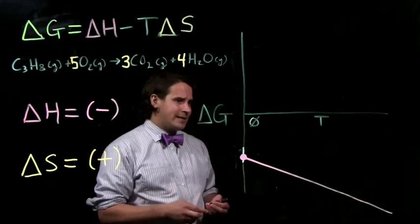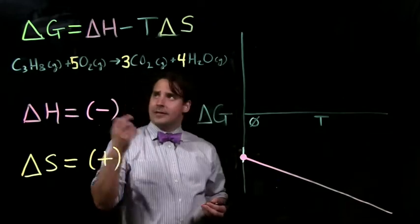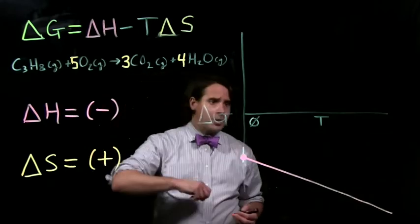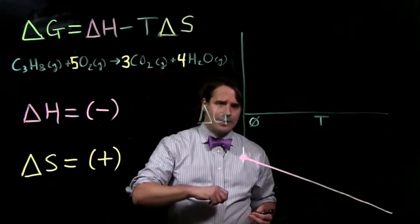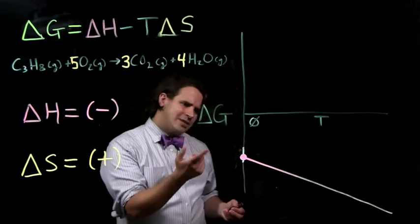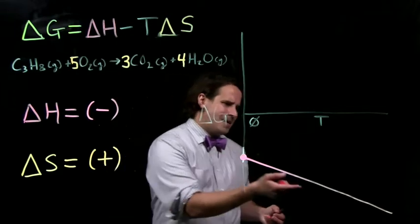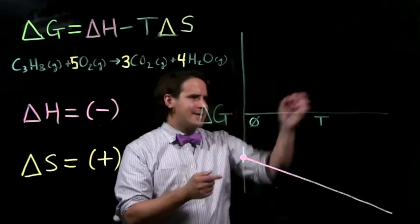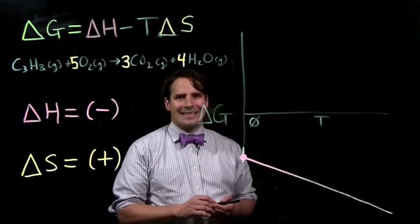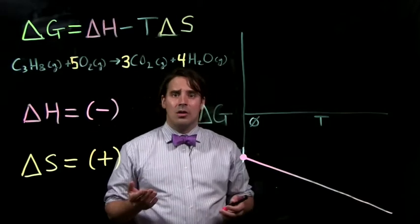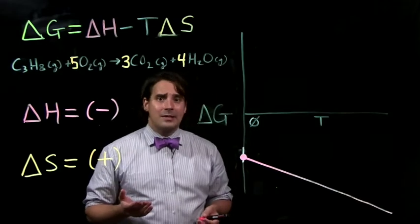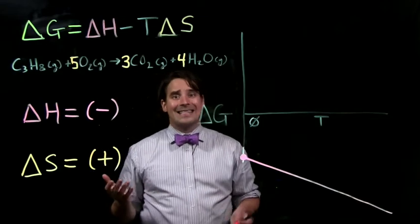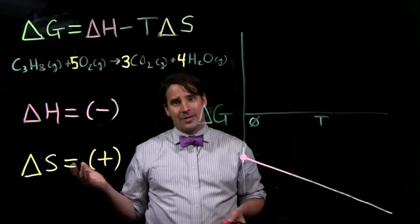As we can see, in this particular combustion reaction, delta G is always going to be negative. There's no point where this crosses the x-axis. So a reaction like this would be spontaneous at all temperatures.